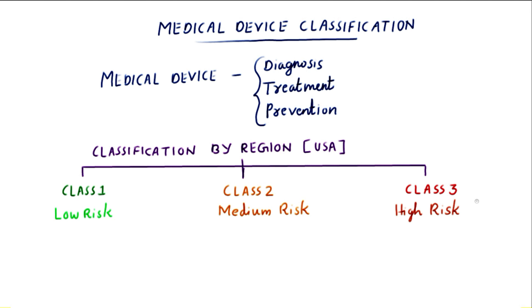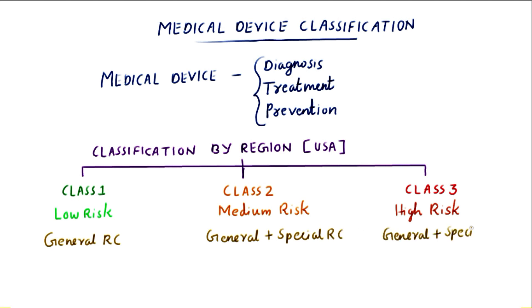Class 1 devices require general regulatory control, Class 2 devices require general plus special regulatory control, and Class 3 devices require general plus special regulatory control as well as pre-market approval. Special regulatory control requires special labeling requirements, mandatory performance standards, and post-market surveillance.